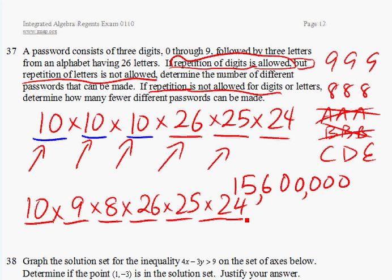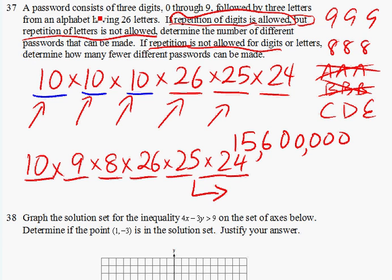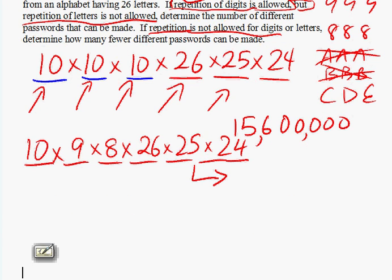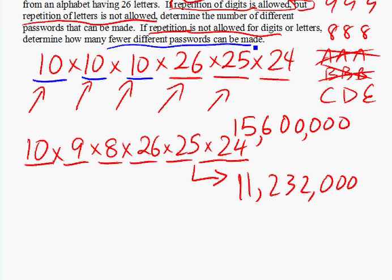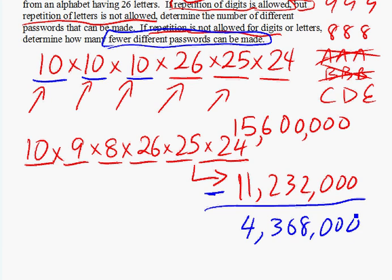Let's multiply these numbers out. And the answer comes out to be, and we have 11,232,000 different password combinations. We're not finished here. Don't stop here. You read on to the question. The last part asks how many fewer different passwords can be made. So the key word is fewer here. I'm going to have to subtract the bottom total from the top, from the original. And when you subtract that, you will get 4,368,000 different password combinations.